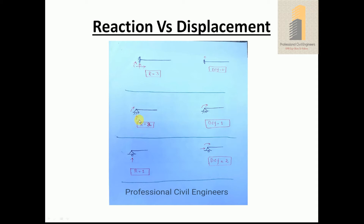For a hinge support, reactions are two but degree of freedom is one. For a roller support, reactions are one but degrees of freedom are two — one horizontal and one moment.